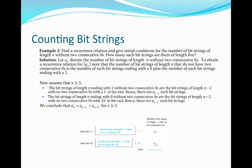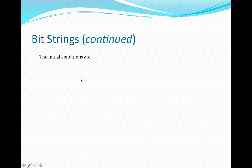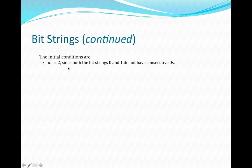Next we establish initial conditions. Since the recurrence uses the previous two terms, we need two initial conditions: a sub 1 and a sub 2. For a sub 1, bit strings of length 1 have only one bit, so there is no possible way to have consecutive zeros. We simply count all bit strings of length 1, which are either 0 or 1, giving us a sub 1 equals 2.